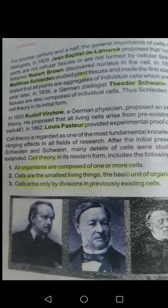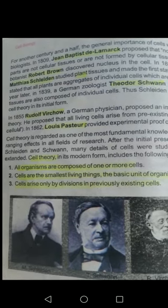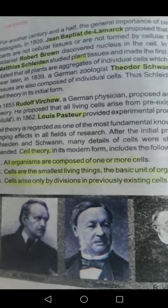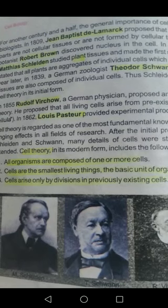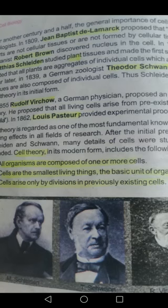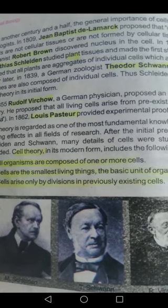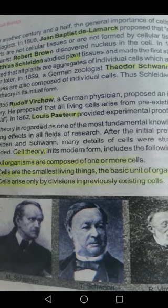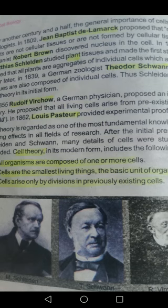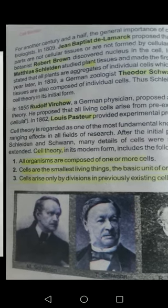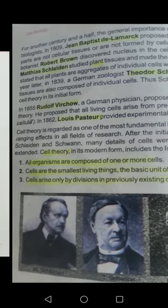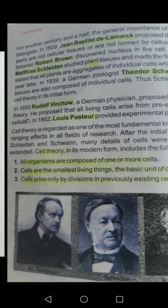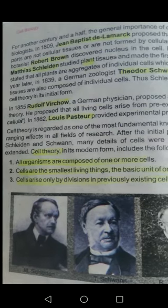Robert Brown was followed by Matthias Schleiden, who discovered plant tissues. He was a German botanist, and in 1838 he proposed the first statement of cell theory, stating that plants are aggregates of individual cells which are fully independent.